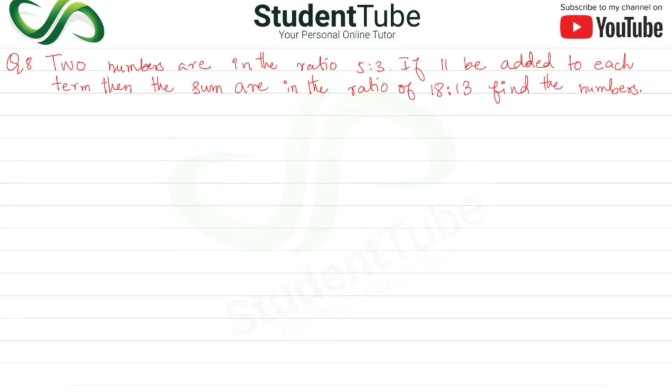Question is, we have 8. Two numbers are in the ratio 5:3. If 11 be added to each term, then the sum are in the ratio of 18:13. Find the numbers.